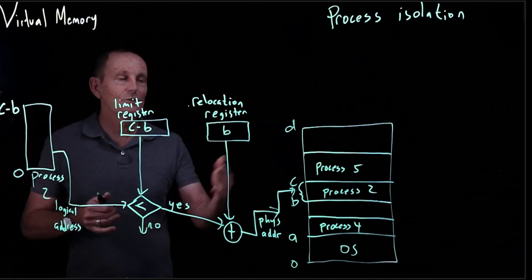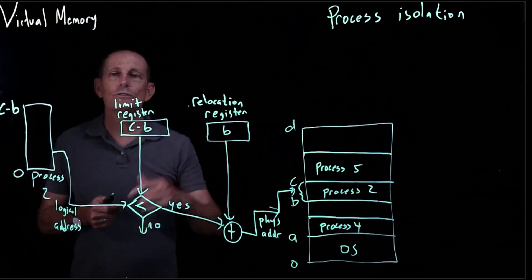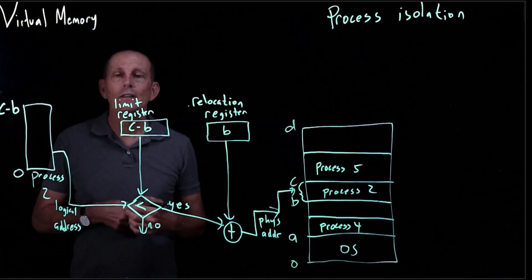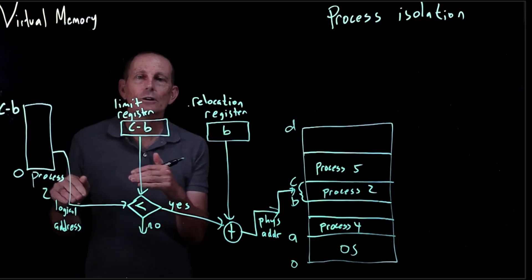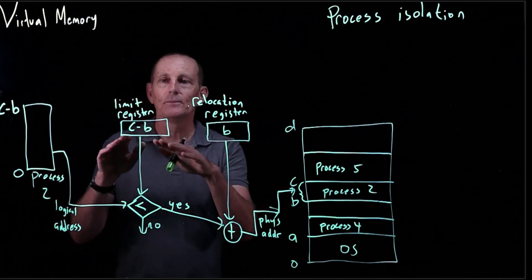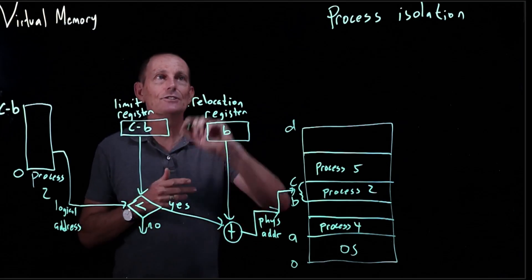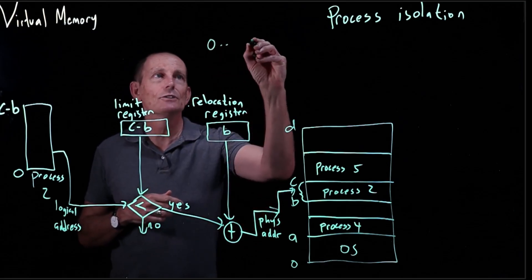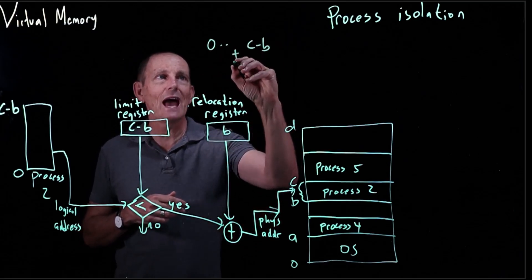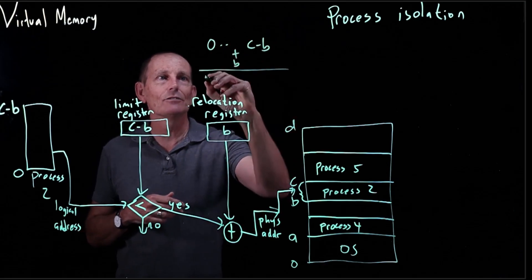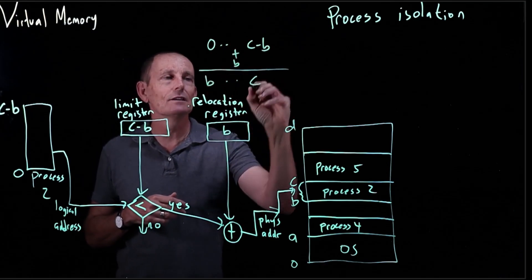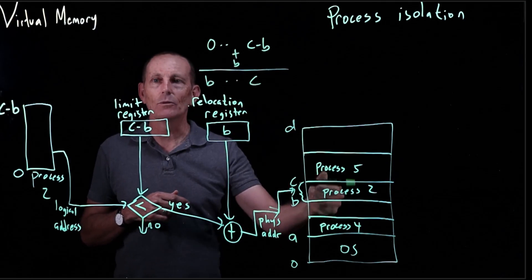So while process two is executing, these are the values of the registers. Therefore, any addresses that are within the range zero to C minus B will get B added to them. So if they're in the range zero to C minus B, then we add B, we get from the range B to C, which is exactly what we want.